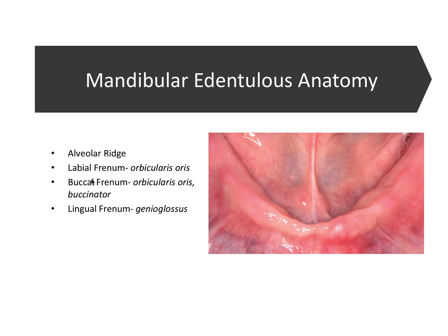You'll notice some other familiar terms. We talked about a labial frenum in the maxillary arch, and we again have a labial frenum in the mandibular arch, located at or just by the midline. Now the orbicularis oris is a facial muscle that encircles the lips, and for the board exam we need to remember that the orbicularis oris muscle attaches to the labial frenum, whereas there is no muscle attachment in the maxillary labial frenum.